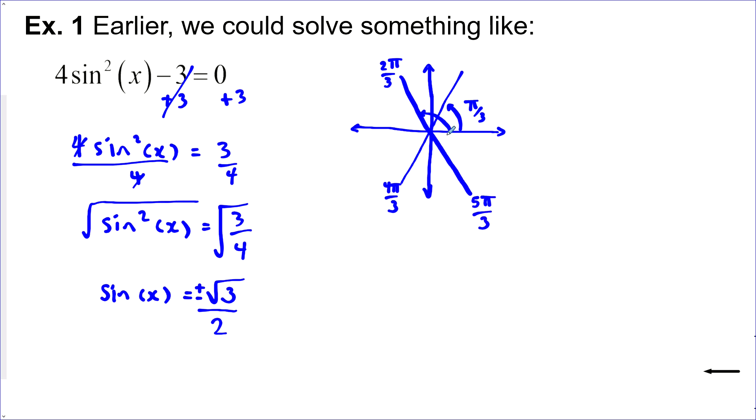Now, I could make an individual statement for each one. So x is equal to pi over 3 plus 2 pi n. And just get that single terminal arm each time. But there's a more efficient way to do it. I could get both of these that lie on this same line here in the same statement. If I just added pi each time, or subtracted pi, then I get to the other one.